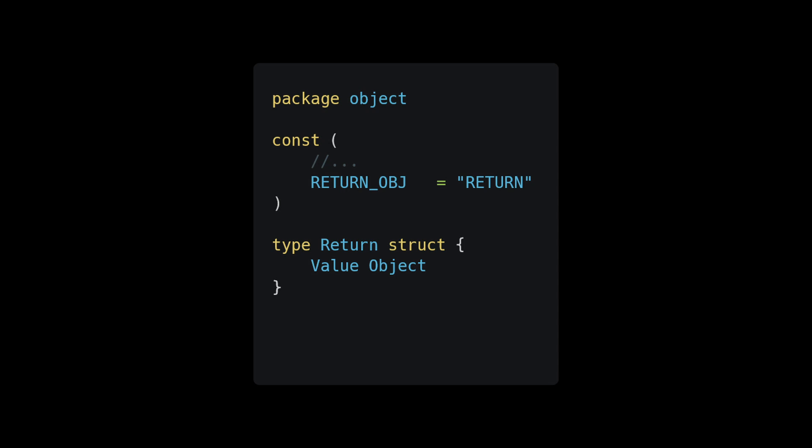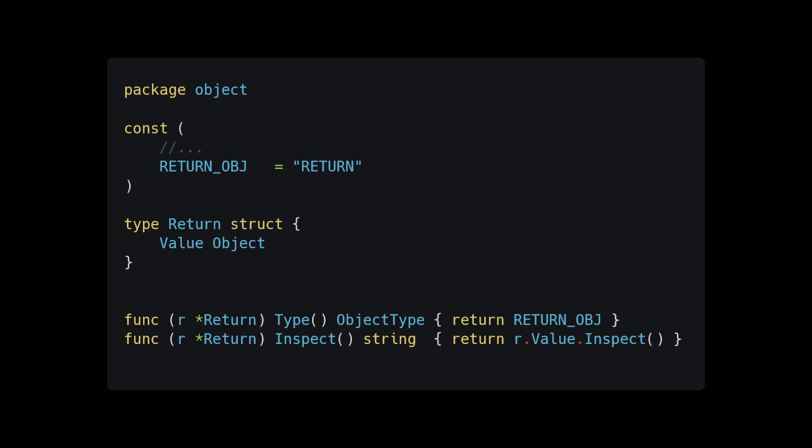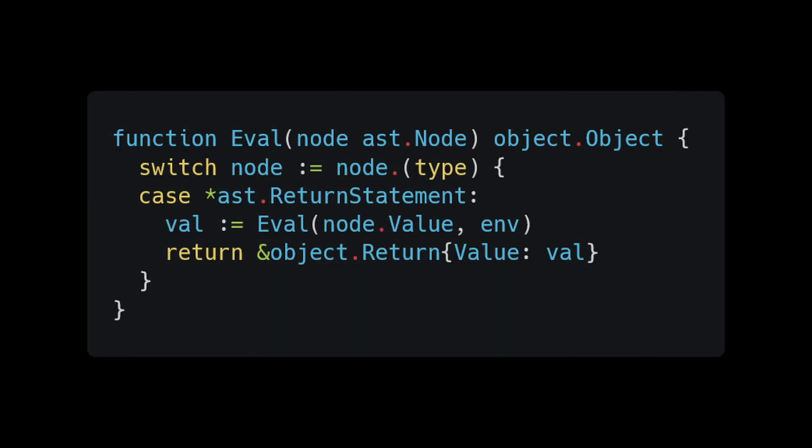Create the return object struct with a value field of type object, then override the parent method. The inspect method just calls inspect on the value object. To account for return objects during evaluation, add another case to the top level eval function. First evaluate the value inside our AST return node, then return the result wrapped inside our new return object. We'll also need to adjust the body of our evaluate_statements helper method.